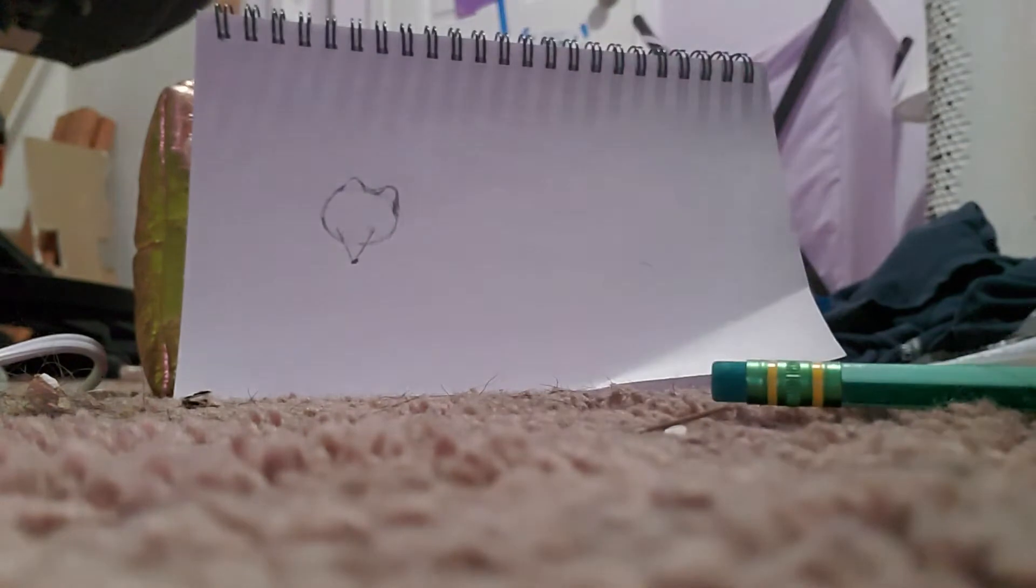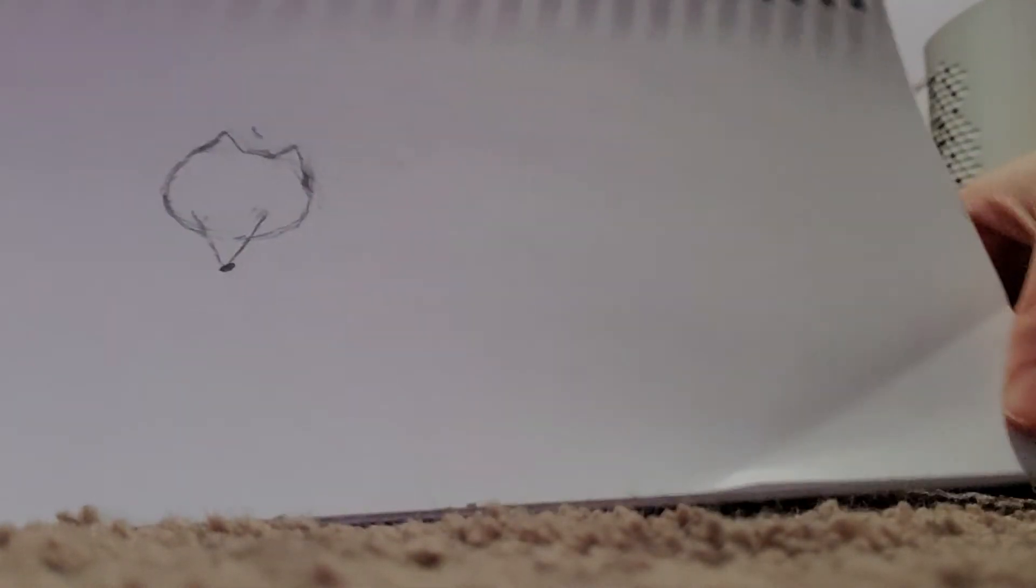There we have the basic hedgehog base. Now what we're going to do kind of looks like a little fox and mouse right now, but that's okay because of course it's going to come together when we add the spikes.